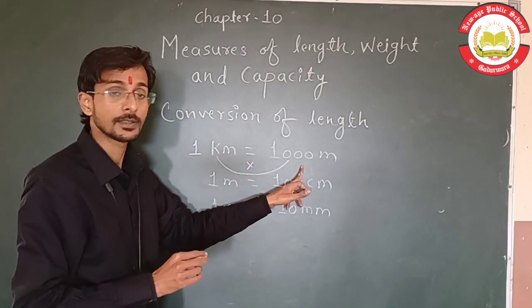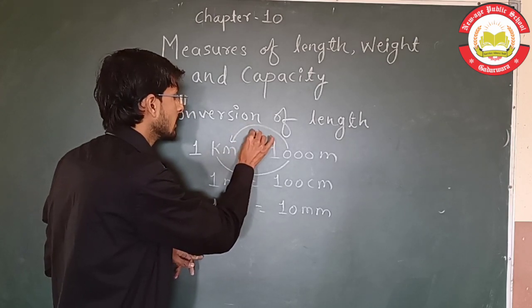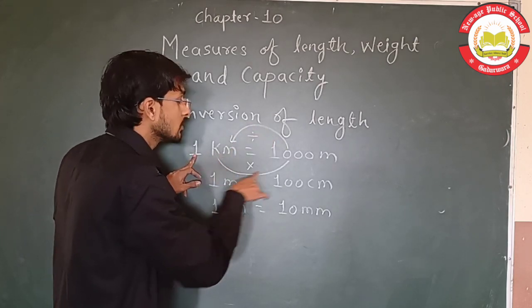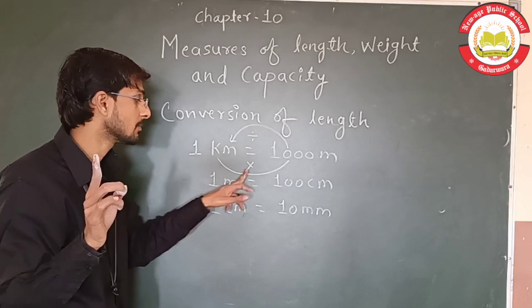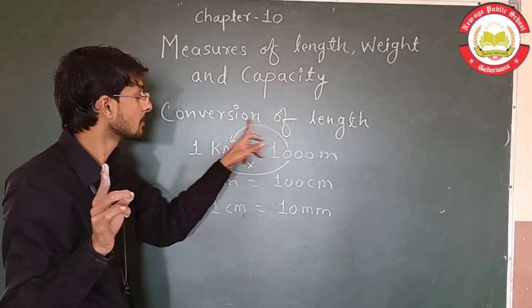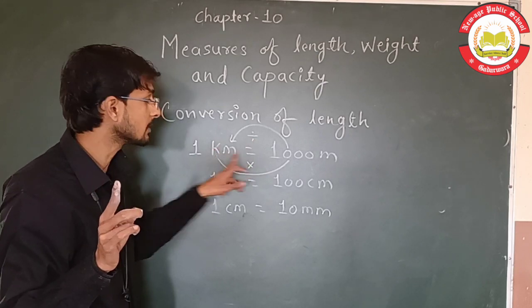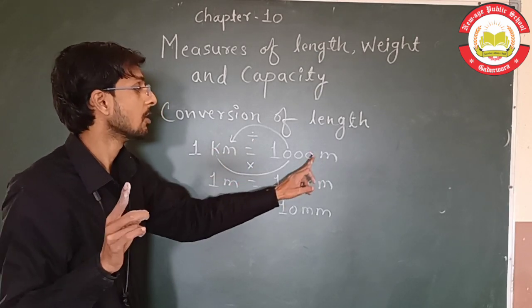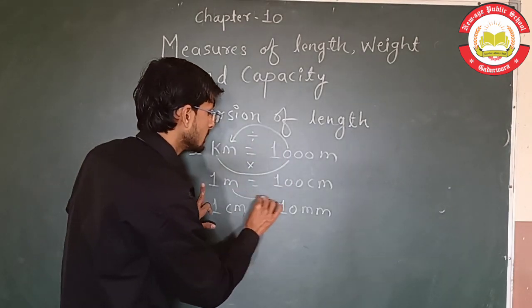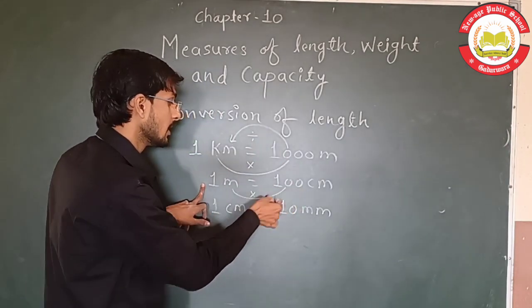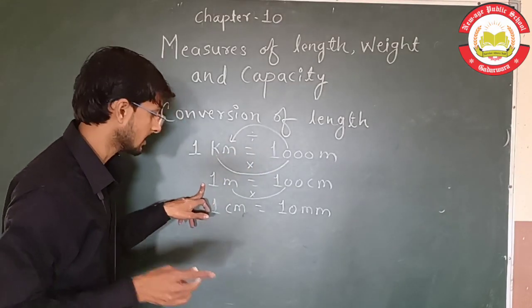When we go from 1 meter to a smaller unit, we multiply by 1000. And when we go from 1 meter to 1 kilometer, we divide. So meters to centimeters: multiply by 100; centimeters to meters: divide by 100.